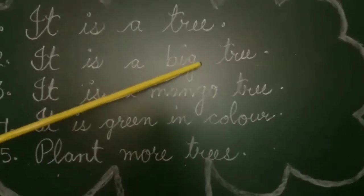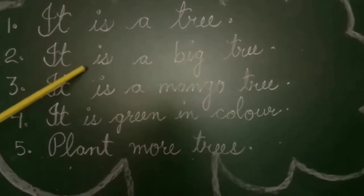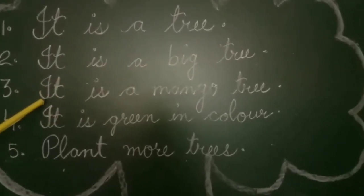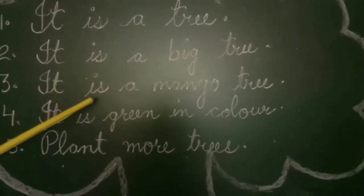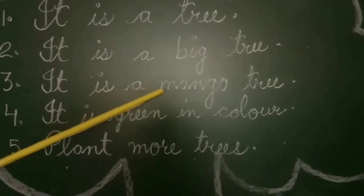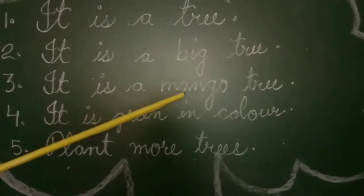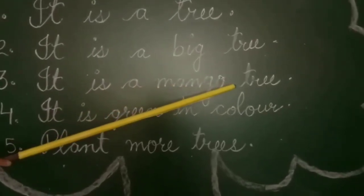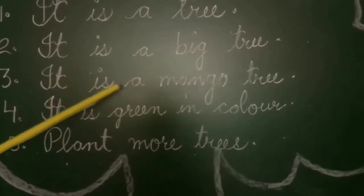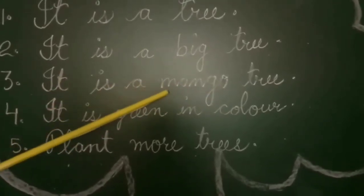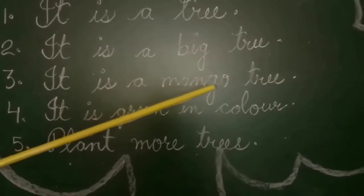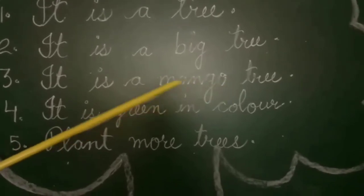Tree means pear. I-T, I-S, it is a M-A-N-G-O, mango, T-R-E-E, Tree. It is a mango tree. Mango means aam. Tree means pear.